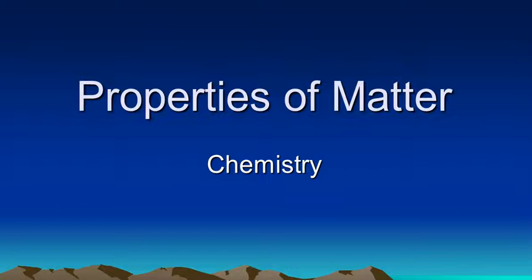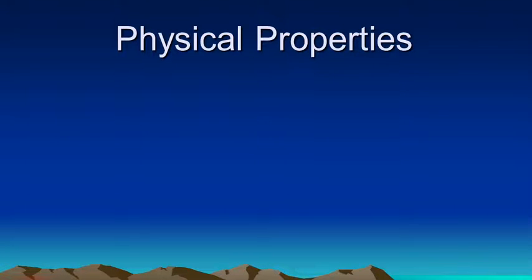In chemistry and all of science we spend a lot of time describing matter, and so in this lesson we're learning about how we describe these properties of matter. Now there are two types of properties: physical properties and chemical properties.